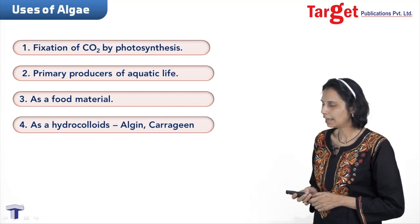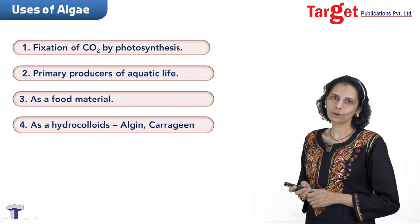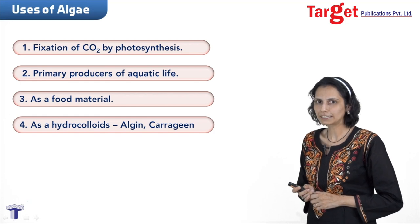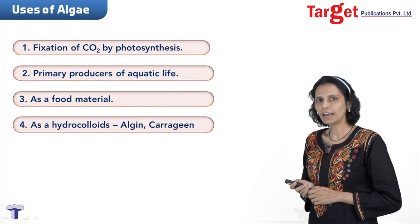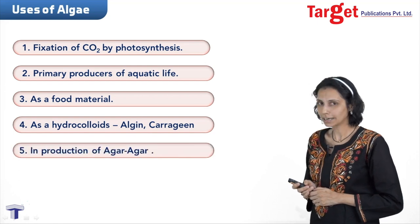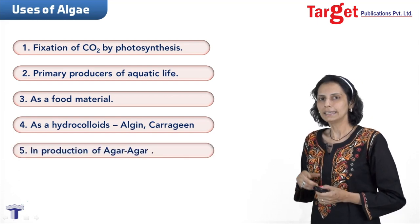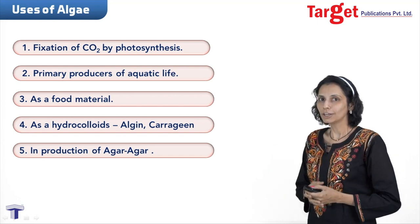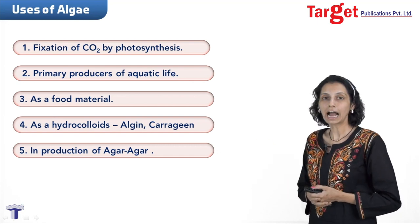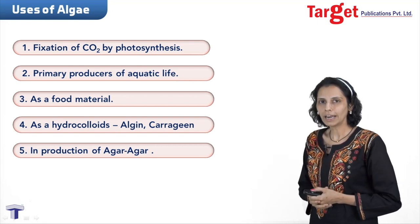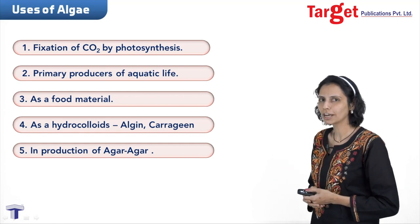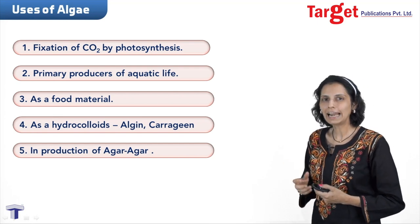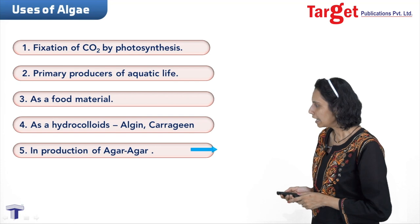What do we mean by hydrocolloids? Hydrocolloids are substances like agar agar. If dissolved in water, they hold the water — as the name suggests: 'hydro' means water, 'colloid' means colloidal mixture. So hydrocolloids are substances which can hold water and form gel-like solutions.